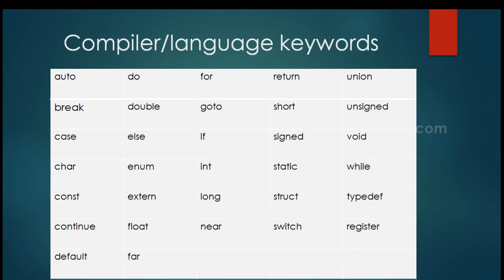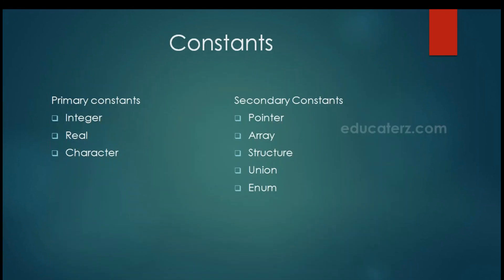Now these are the keywords of C language. Keywords are reserved words which have a specific meaning provided by the compiler or the language. Keywords are restricted words which cannot be used as a variable name. These are: auto, break, case, char, const, continue, default, do, double, else, enum, extern, float, for, goto, if, int, long, near, return, short, signed, static, struct, switch, union, unsigned, void, while, typedef, and register. We will look at each of these keywords later.